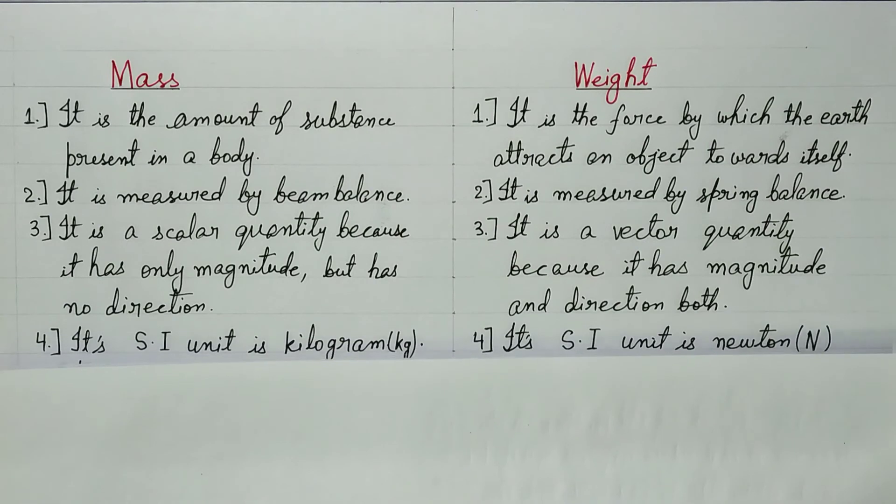Fourth difference. Mass: Its SI unit is kilogram, and in short, it is kg. Weight: Its SI unit is Newton. Newton can be denoted in short as capital N.